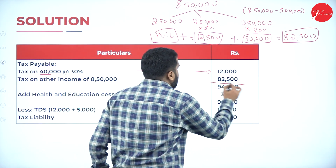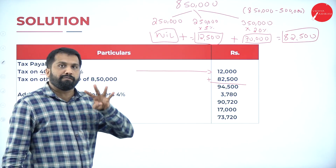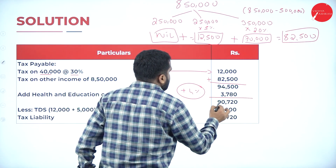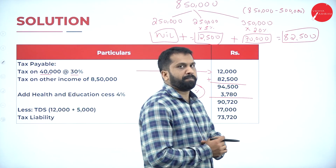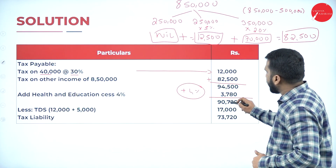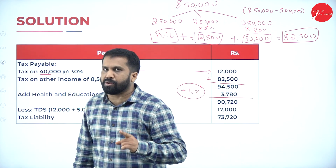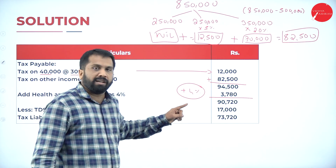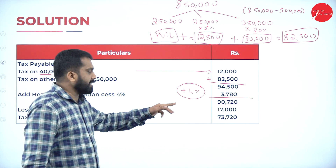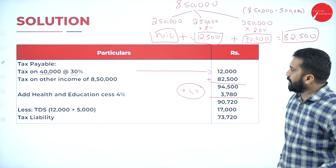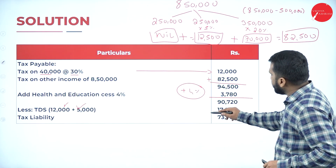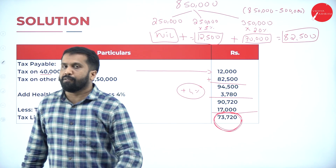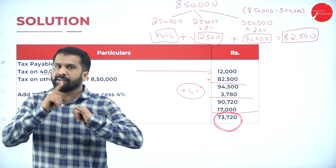Add lottery tax: twelve thousand plus eighty two thousand five hundred equals ninety four thousand five hundred. On that, education cess at four percent: ninety four thousand five hundred plus four percent equals three thousand seven hundred eighty. Total tax is ninety eight thousand two hundred eighty. Subtract TDS already paid of seventeen thousand; your net advance tax payable is seventy three thousand seven hundred twenty.